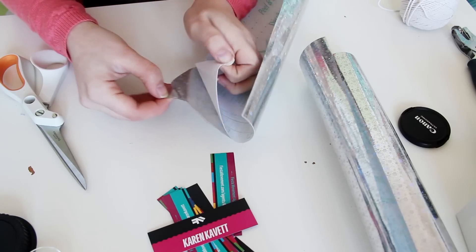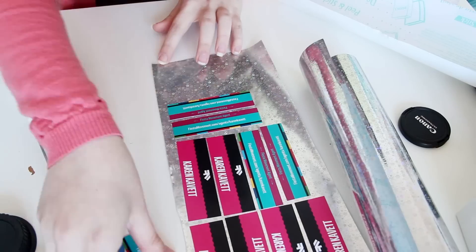Then just unpeel the backing and start sticking the cards to the back of it. Once all of your business cards are stuck down, just use your scissors to cut them out.